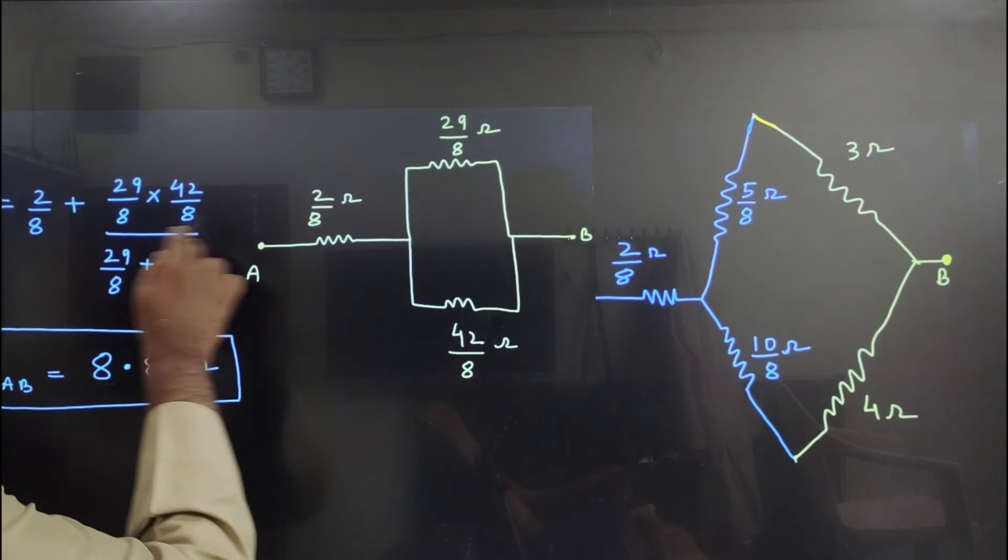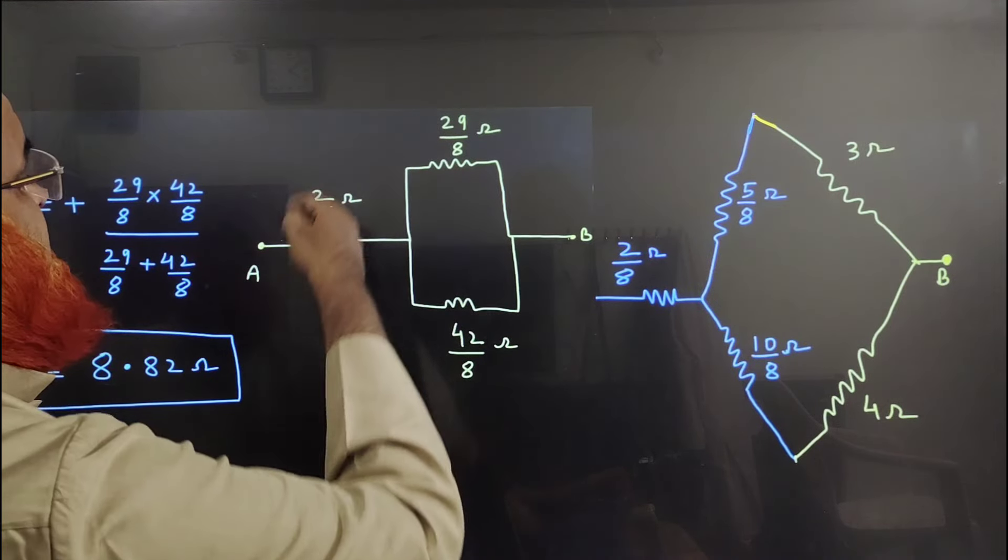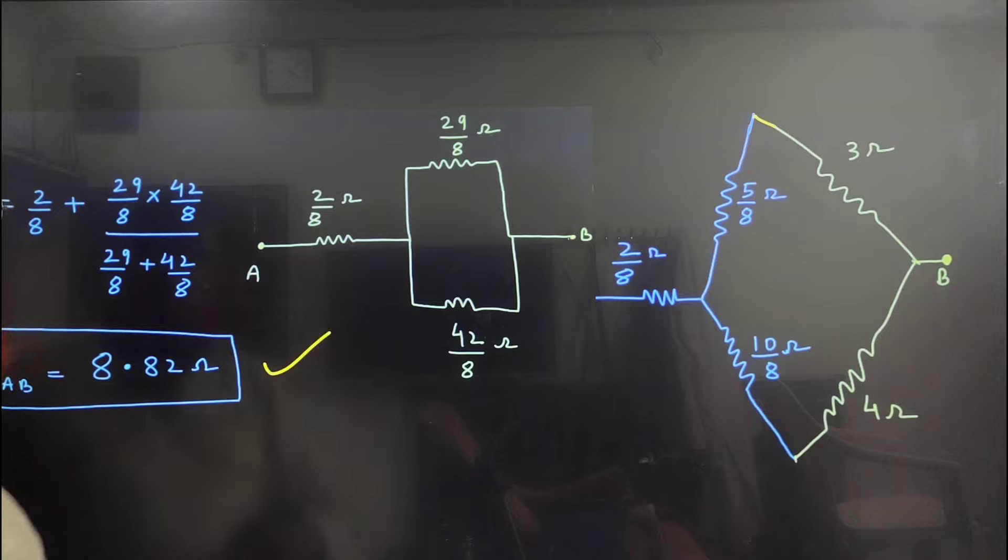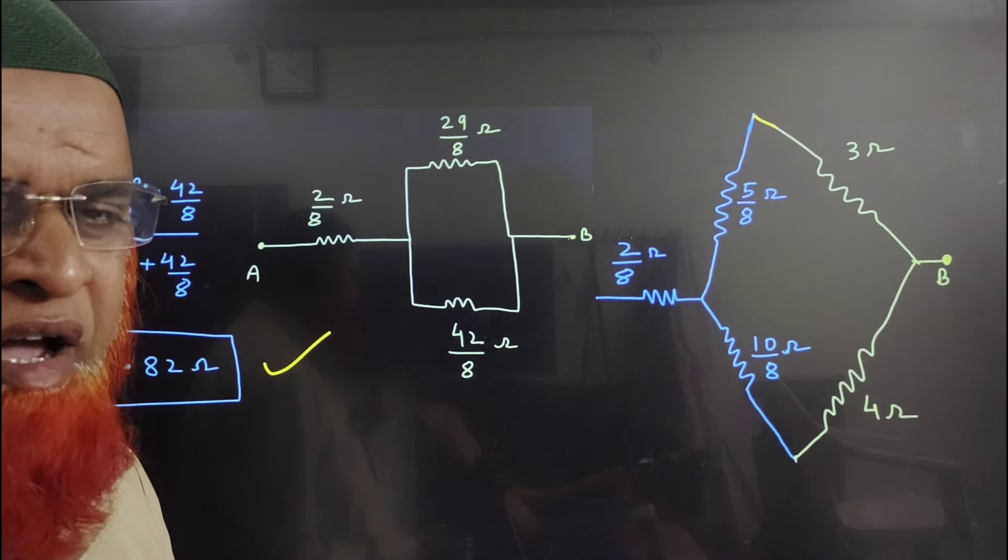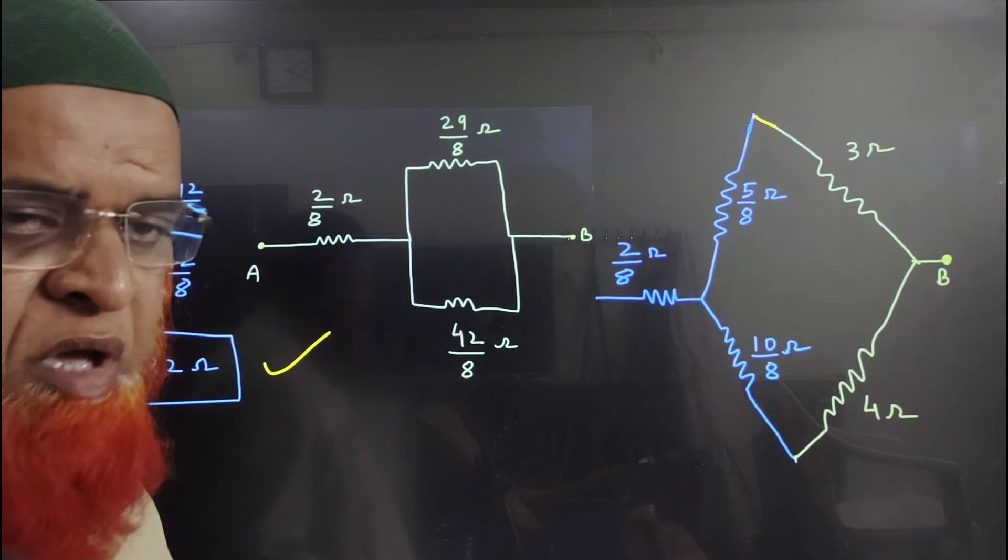As these two are parallel, you have to make products and add them. After calculating, the final result is 8.82 ohms. So unbalanced Wheatstone bridge can be solved by using delta-star trick. Hope you have understood.